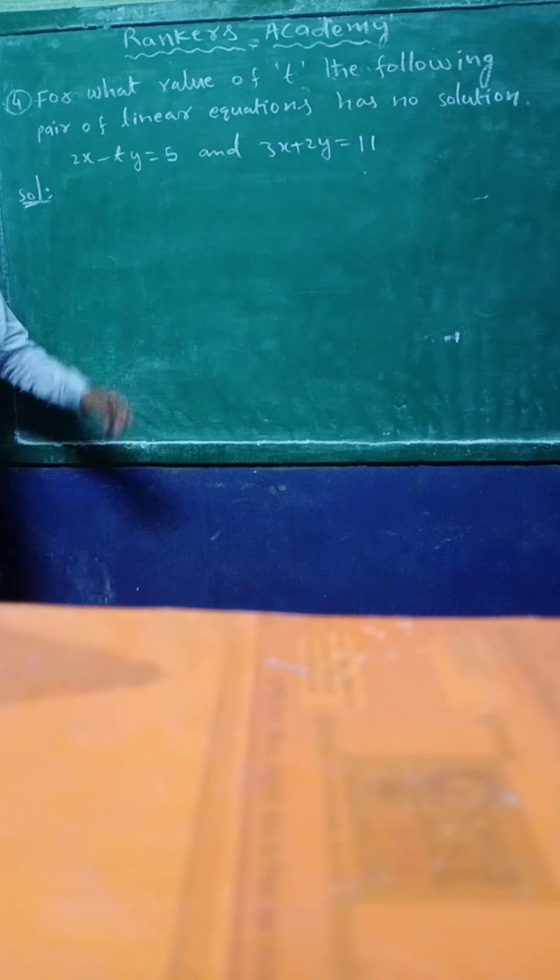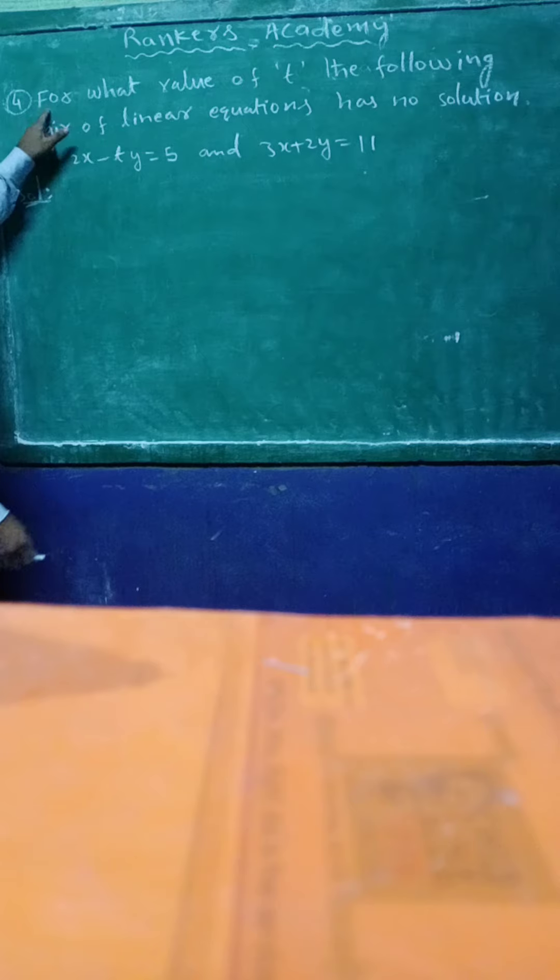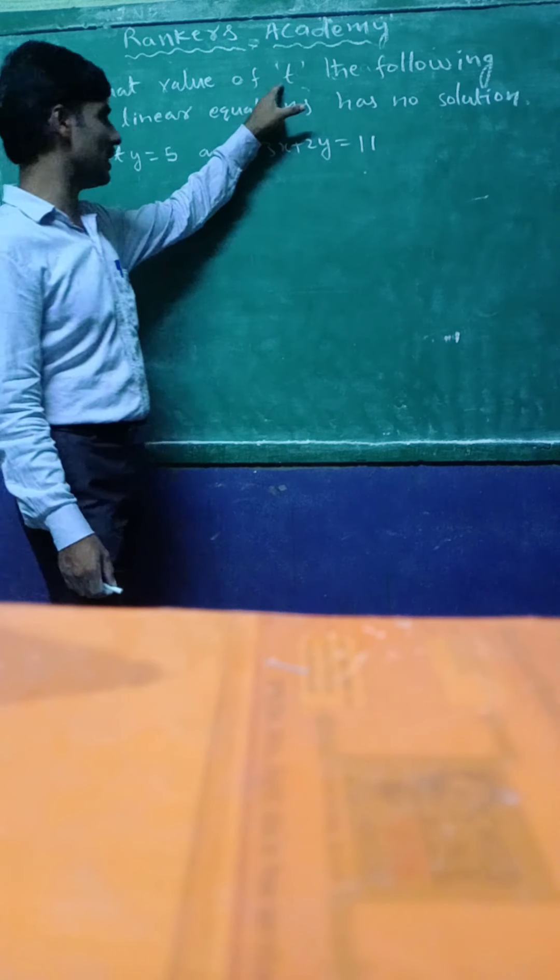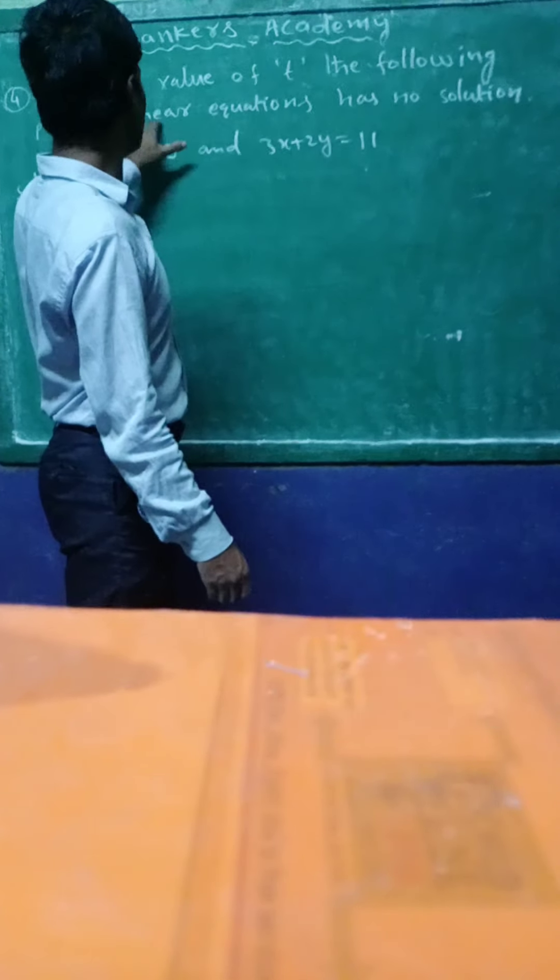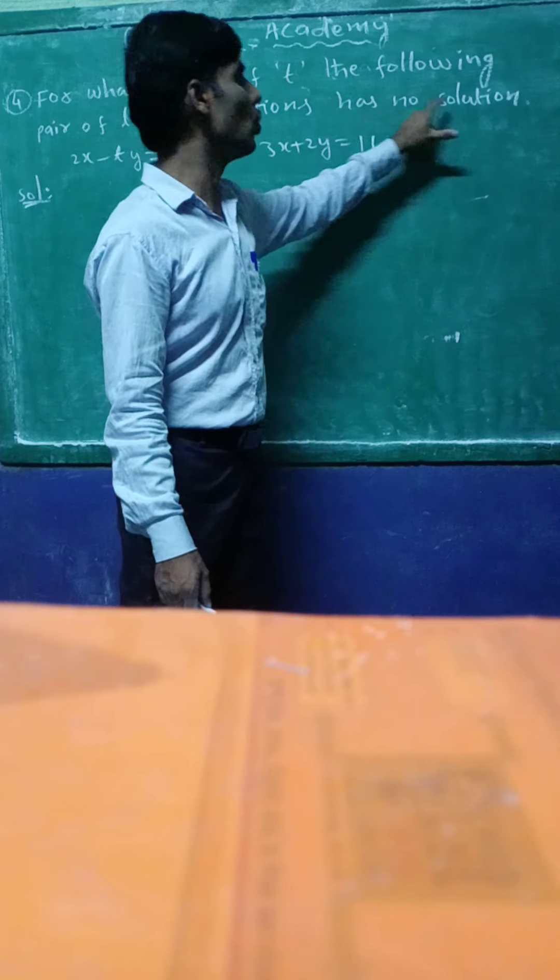Here it is, fourth chapter problem. For what value of t does the following pair of linear equations have no solution?